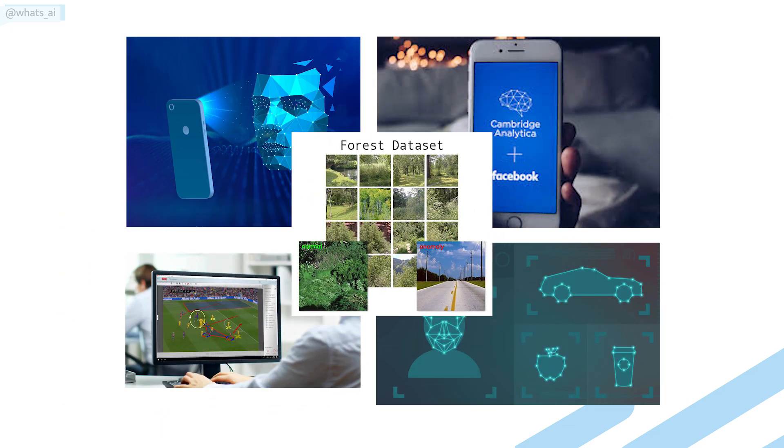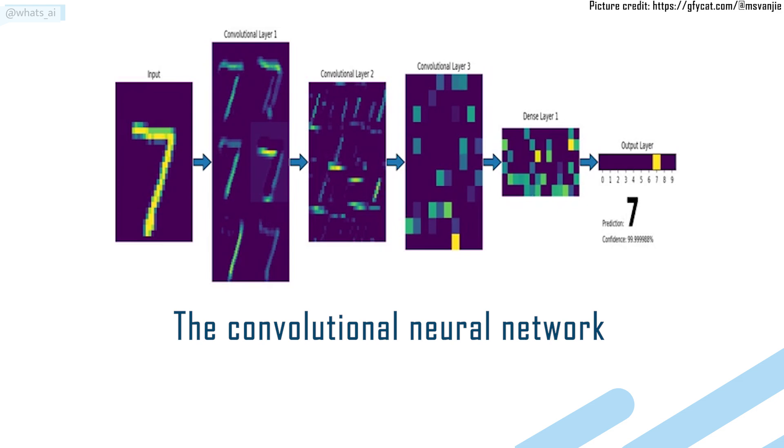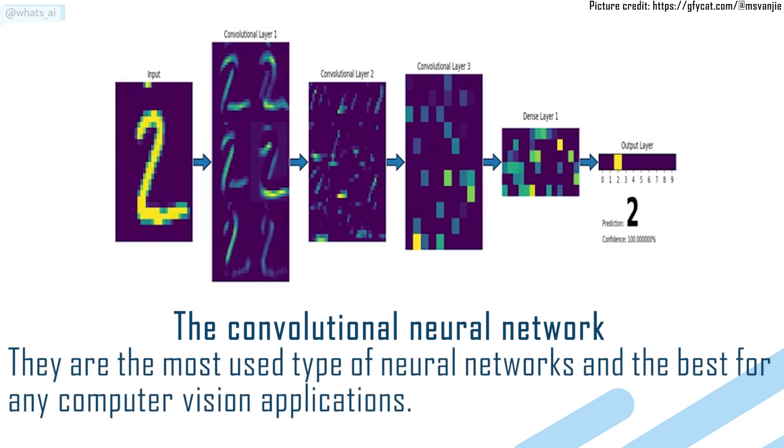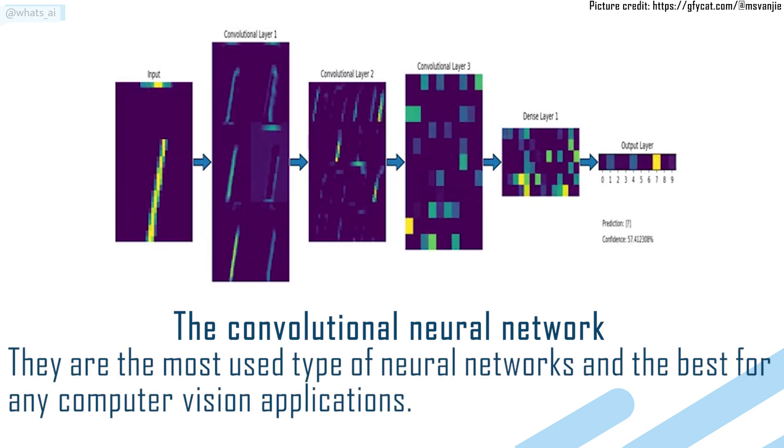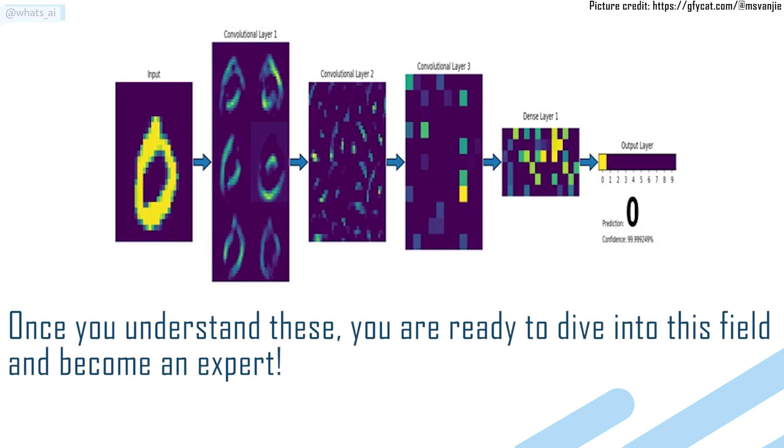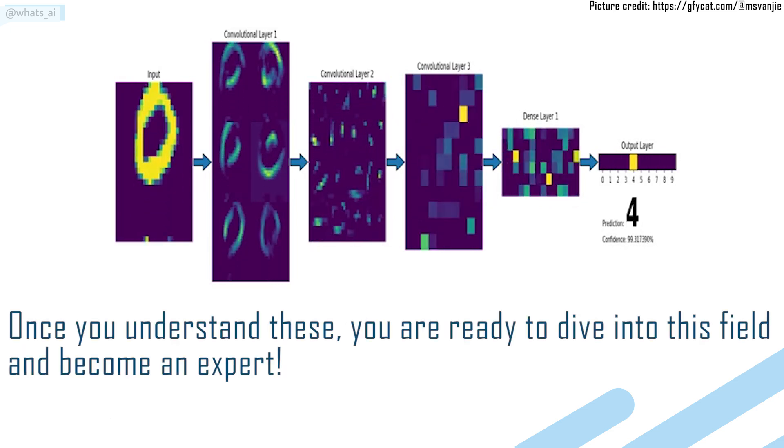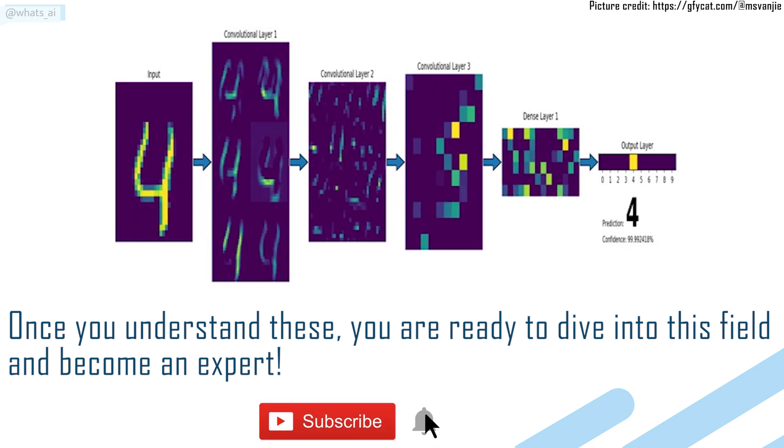These are all powerful AI applications you must have already heard of at least once. But do you know what they all have in common? They all use the same type of neural network architecture, the convolutional neural network. They are the most used type of neural networks and the best for any computer vision applications. Once you understand these, you are ready to dive into the field and become an expert.